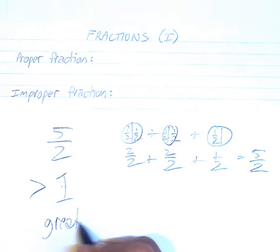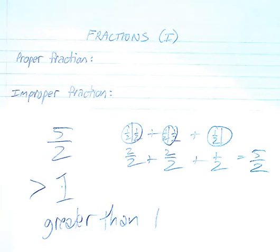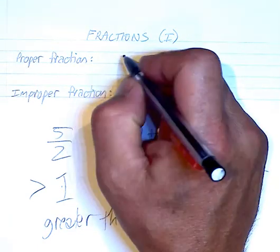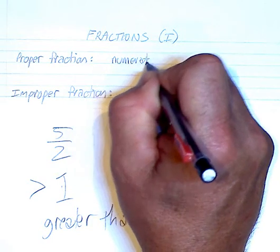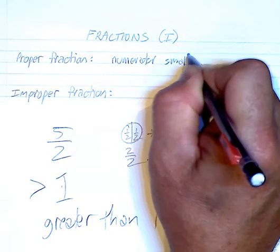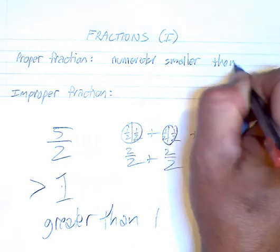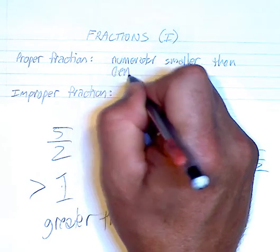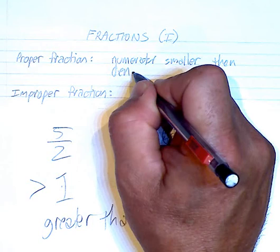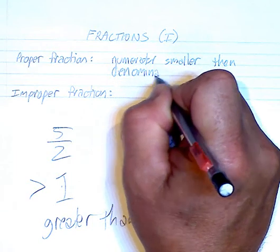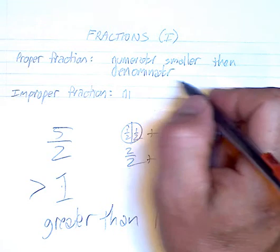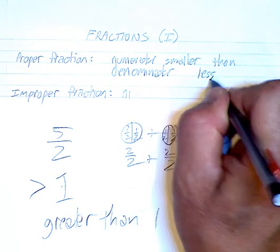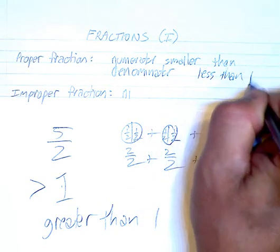Greater than 1. So improper fractions, let's look at proper fractions. So numerator smaller than denominator, and here we can also say this one here is less than 1.